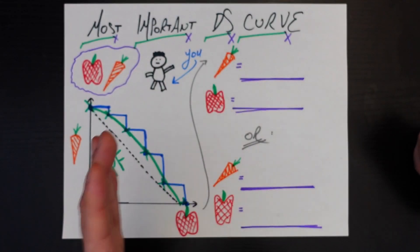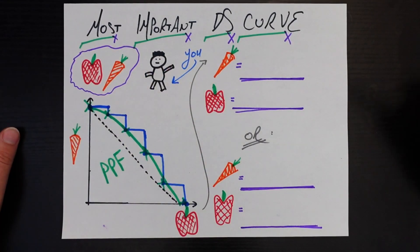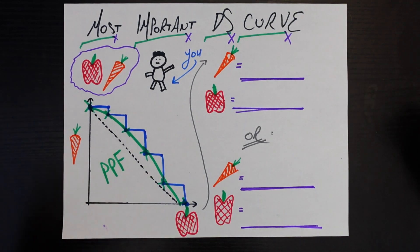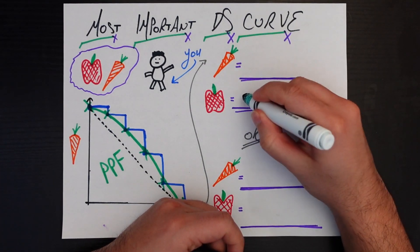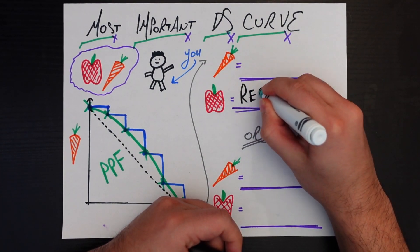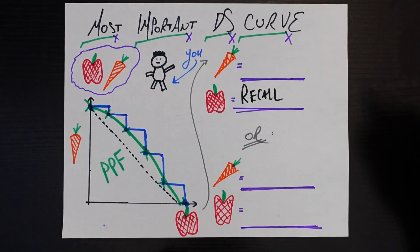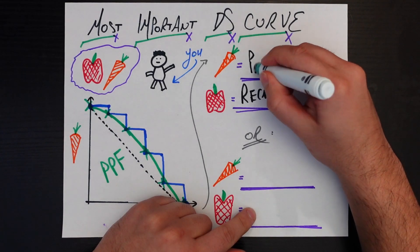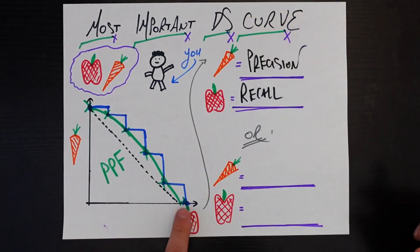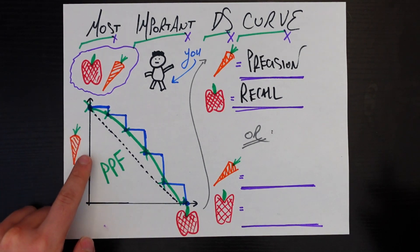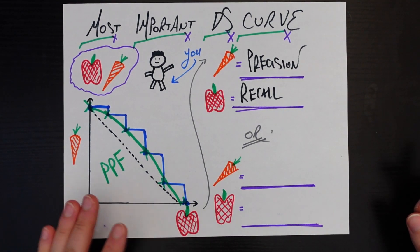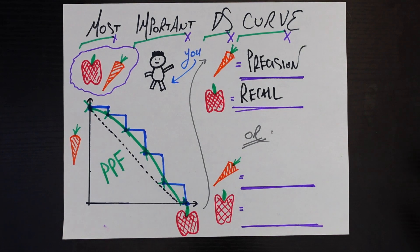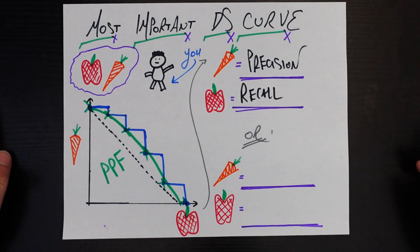That is the link that gets us into why I think this is the most important curve for data science. Instead of sleep and studying, I want to replace apples with a metric in data science you're probably familiar with — recall — and replace carrots with another metric called precision. If I replace apples with recall and carrots with precision, you probably don't know this as a production possibilities frontier — that's a very econ-y term — but you know it as a precision-recall curve, which is one of the staples any data scientist will look at for binary classification problems.